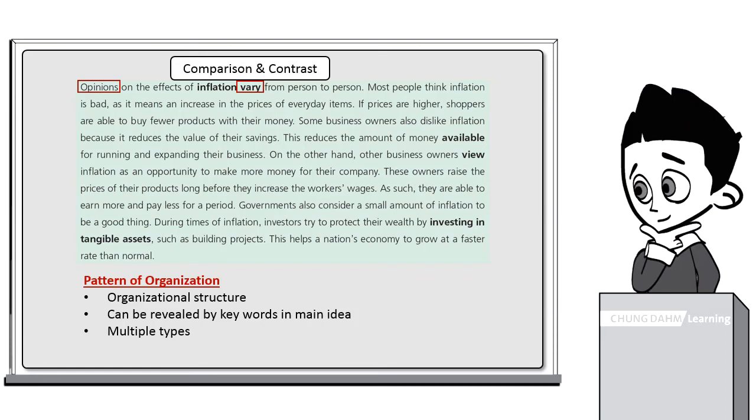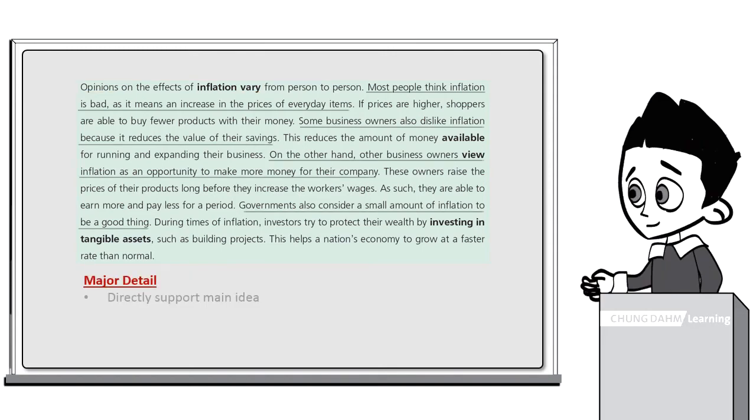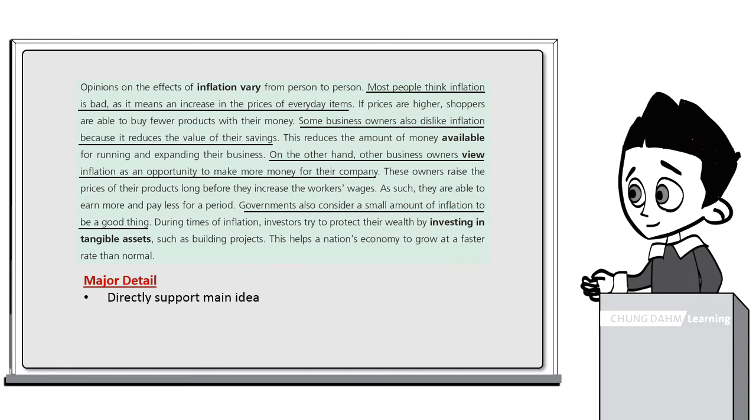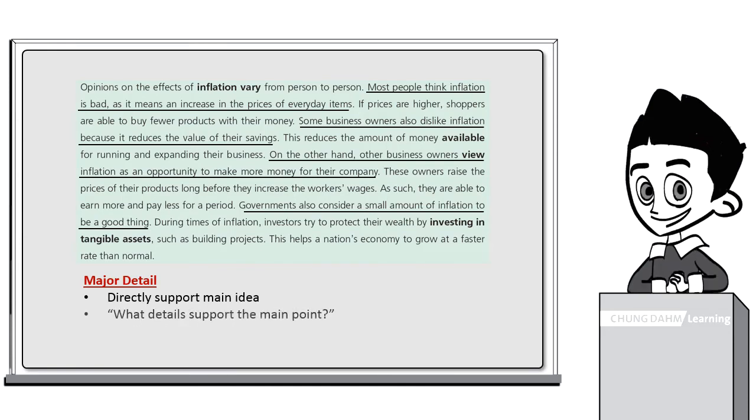Once the main idea and pattern of organization are identified, it should be easier to predict and find the major details of the paragraph, which are statements that directly support the main idea. Major details should answer the question: what details are provided to directly support the author's main point?